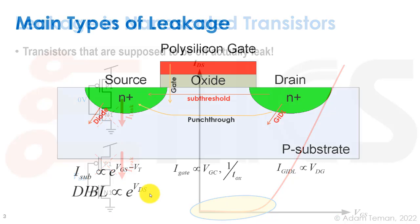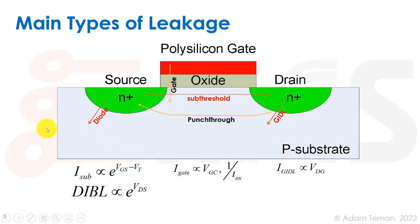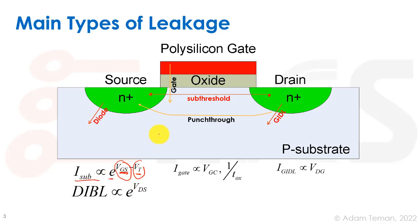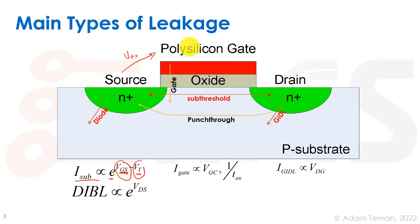The main leakage we discuss is sub-threshold leakage — leakage from the drain to the source, the same direction our current really flows. Sub-threshold leakage is proportional to VGS in the exponent, specifically VGS minus VT. So it has an exponential dependence on two parameters: VGS, and VT which is a property of the transistor. Any change in VGS or VT will cause an exponential change in sub-threshold leakage when VGS is smaller than VT. Of course that has a dependence on the gate voltage.